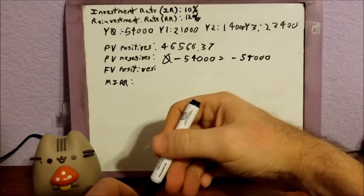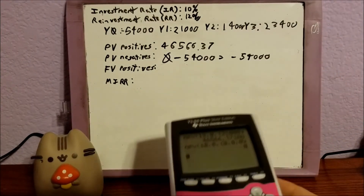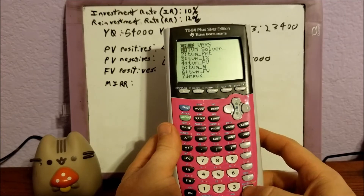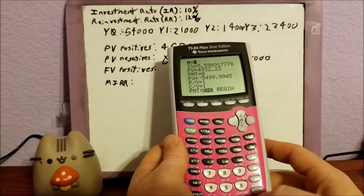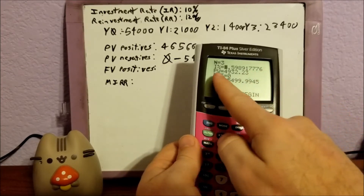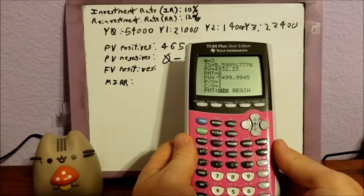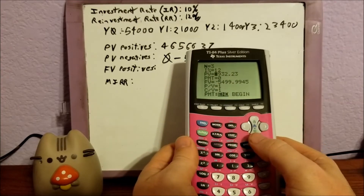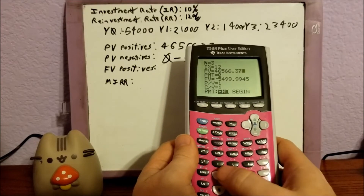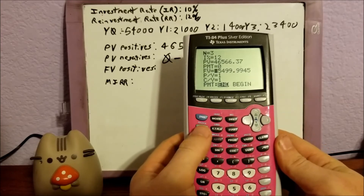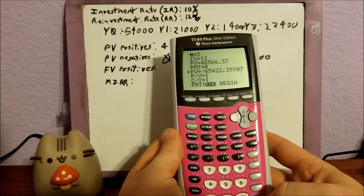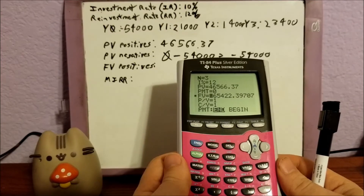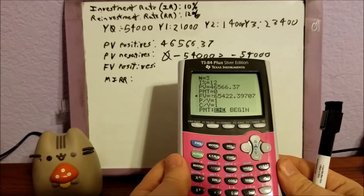Now for the future value of the positives. We go to Apps, finance calculators, and open the TVM solver. This time N equals 3 — three years. Our reinvestment rate is 12, since we're doing the future value of the positives. Our present value is 46,566.37. We solve for future value with alpha solve, and that gives us negative 65,422.40.